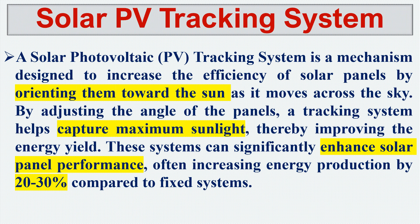Solar photovoltaic tracking system is a mechanism designed to increase the efficiency of solar panels by orienting them towards the sun. The objective is to orient the solar panels towards the sun as it moves across the sky — from morning to afternoon to evening, the sun's position is changing. By adjusting the angle of the panel, the tracking system helps capture maximum sunlight, thereby improving energy yield.